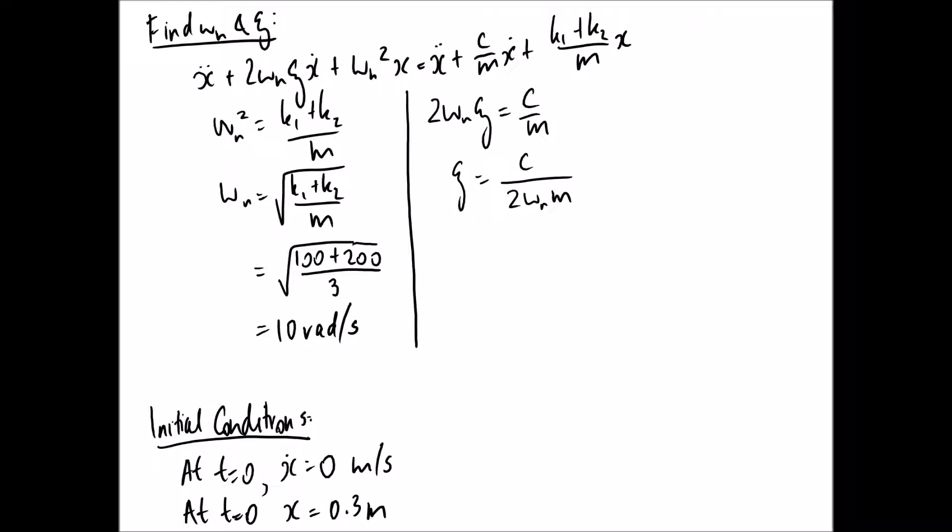Solving for the new damping ratio, which comes out to be... So I said c is 10 this time. And we end up with a damping ratio of 0.167. So this now corresponds to an under-damped scenario.